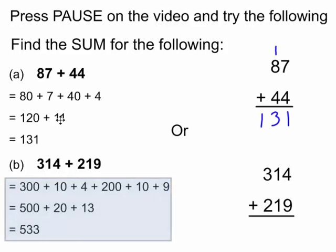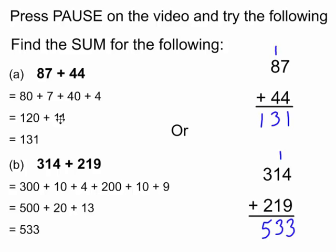314 plus 219. Again, I've broken it down or chunked it into the different groups of hundreds, tens, and ones. By the time we combine those all together, we get 533. If I use the column model, 9 and 4 together is 13, so I have to carry 1 over. I have 1, 2, 3 groups of 10 for a total of 30. And 3 plus 2 is 5 groups of 100, and I get the same value of 533.